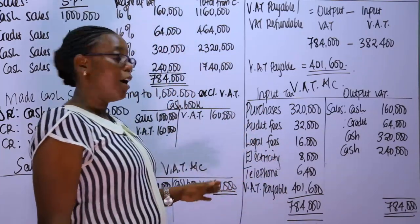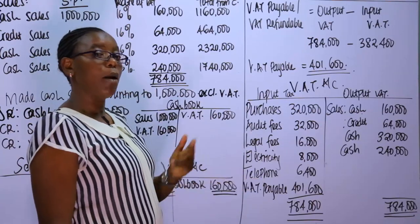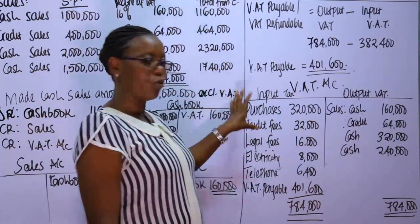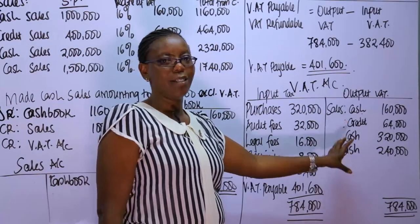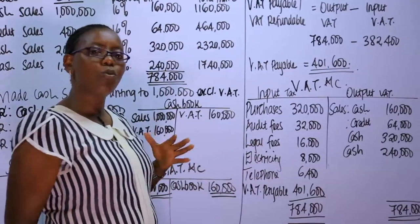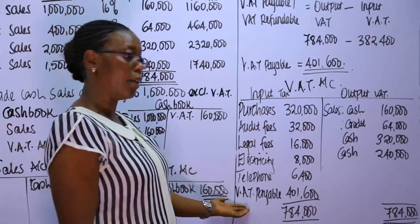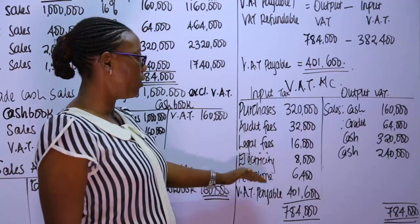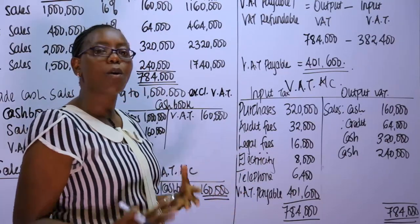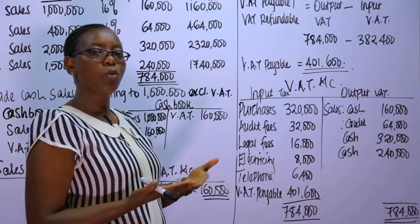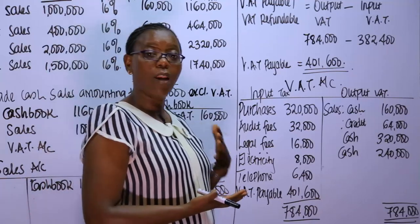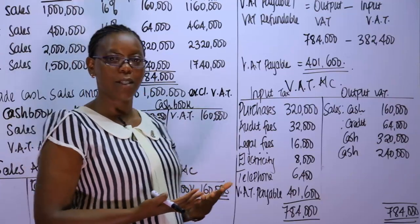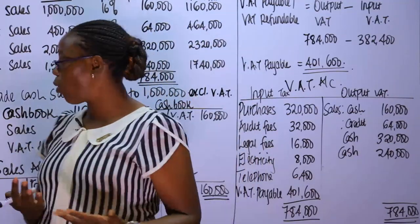The balancing figure will either be VAT payable or refundable. To determine that, you look at how much you've collected versus how much you paid. If what you collected is more than what you paid, you are holding money that belongs to the commissioner. If output is less than input, the commissioner owes you, because the incidence of VAT does not lie with the business — it lies with the final consumer.